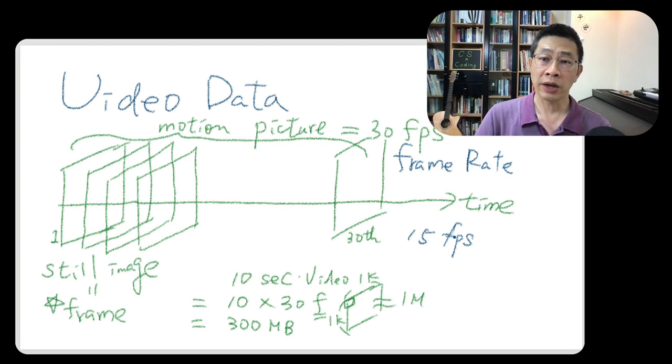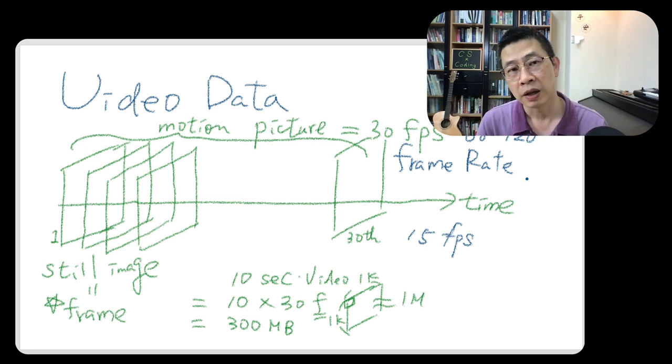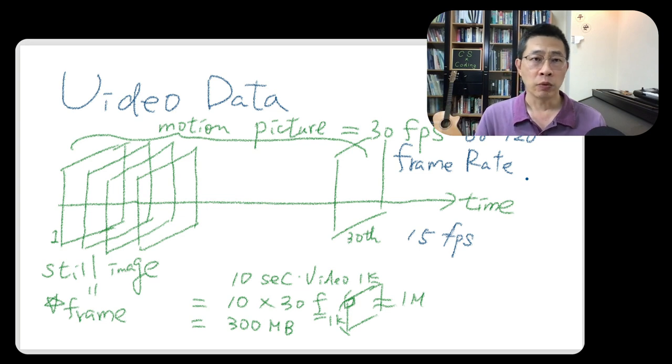Can frame rate be higher than 30 frames per second? For example, you want 60 frames or 120 frames? Yes, definitely. If your application has this kind of demand and you have enough power to do that, you can actually achieve that high frame rate. And of course, you need to pay for the storage to keep it.